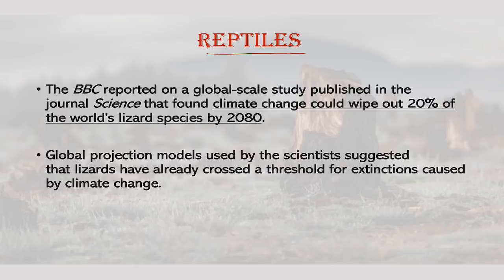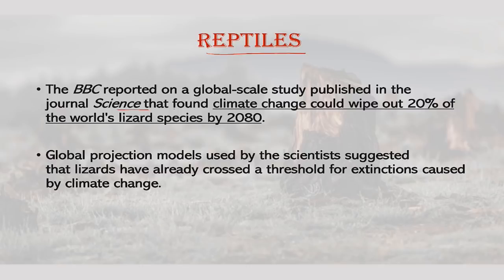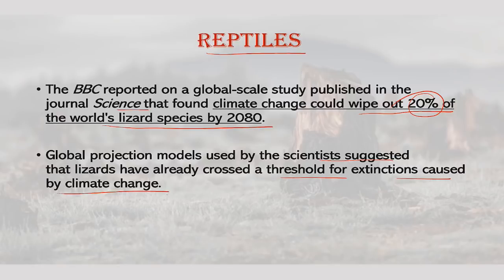If we talk about reptiles, the BBC reported on a global-scale study published in the journal Science that found climate change could wipe out 20% of world's lizard species by 2080. Global projection models suggested that lizards have already crossed a threshold for extinctions caused by climatic change. The fear of lowland species moving to higher elevations has long been predicted as an effect of climate change, and this has been observed with lizard populations too.